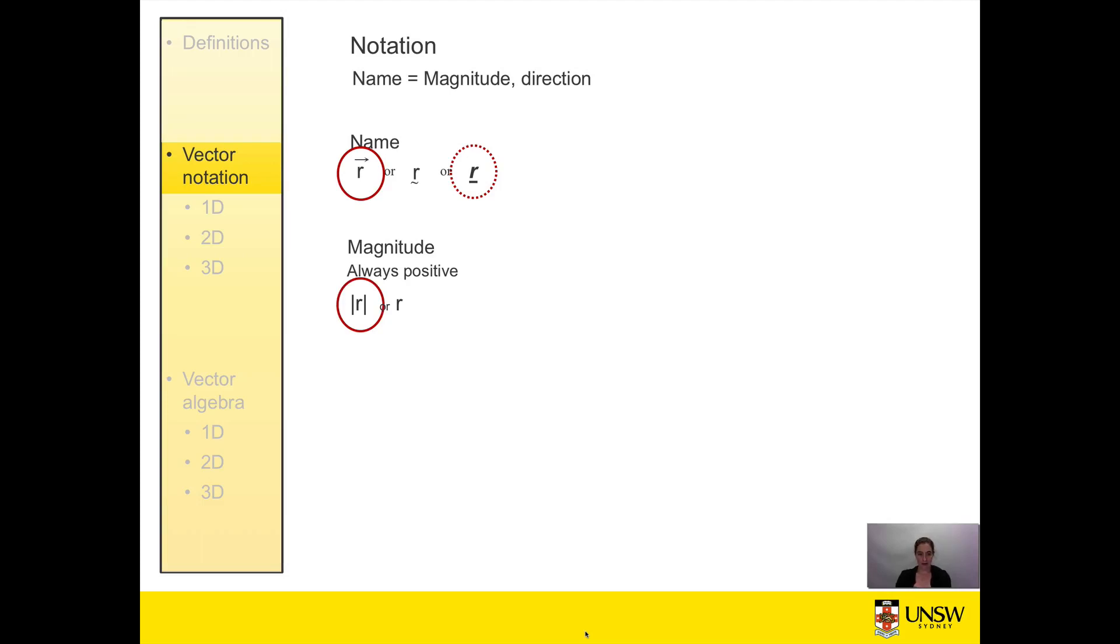And the final component of the vector notation is the direction. To write the vector direction we very often use something called a unit vector. A unit vector is a vector with just a magnitude of one and a direction, and it's unitless.